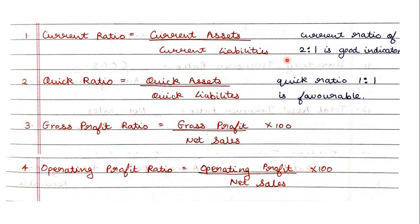Sometimes they ask you whether the current ratio is good or bad. The standard ratio is 2:1, which is a good indicator — if you get current assets double of current liabilities, it is a good indicator. Next, the quick ratio formula is quick assets upon quick liabilities. Quick assets are current assets minus stock and prepaid expenses; quick liabilities are current liabilities minus bank overdraft.